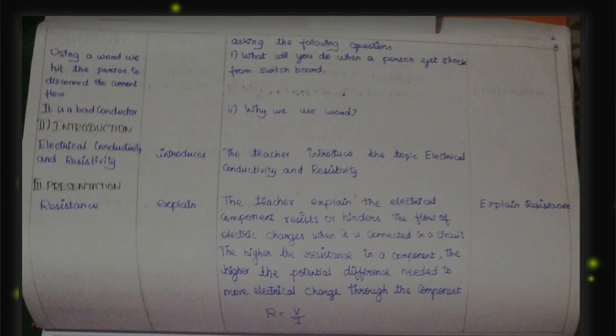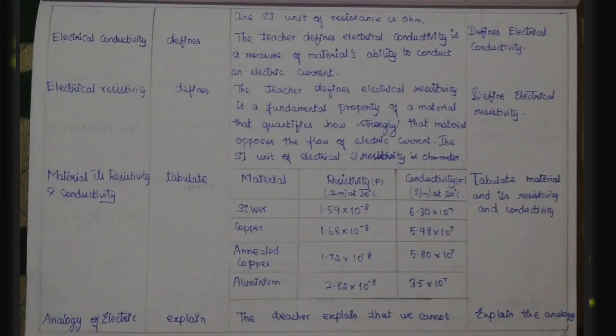In the presentation step, the teacher explains resistance: an electrical component called a resistor hinders the flow of electric charges when connected in a circuit. The higher the resistance in a component, the higher the potential difference needed to move electrical charges through it. The formula is R = V/I. In the evaluation column, we explain resistance and discuss specific behavior.